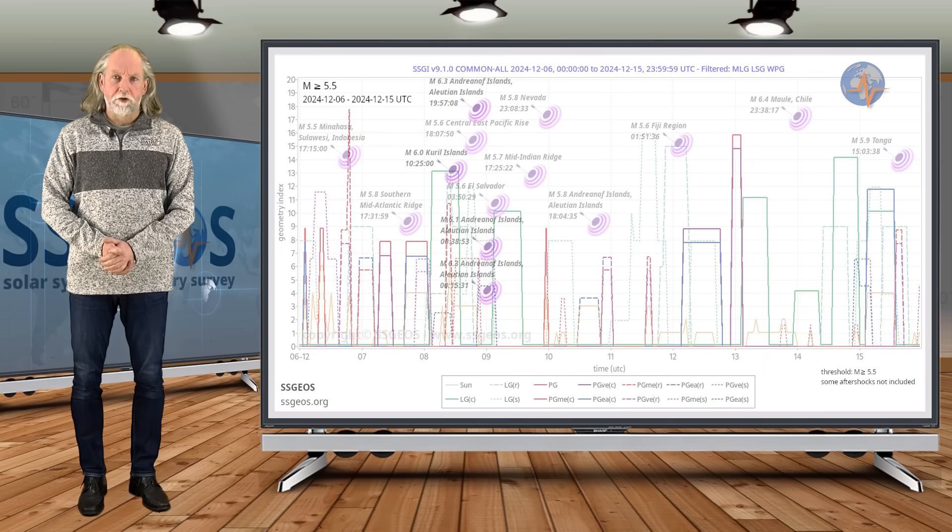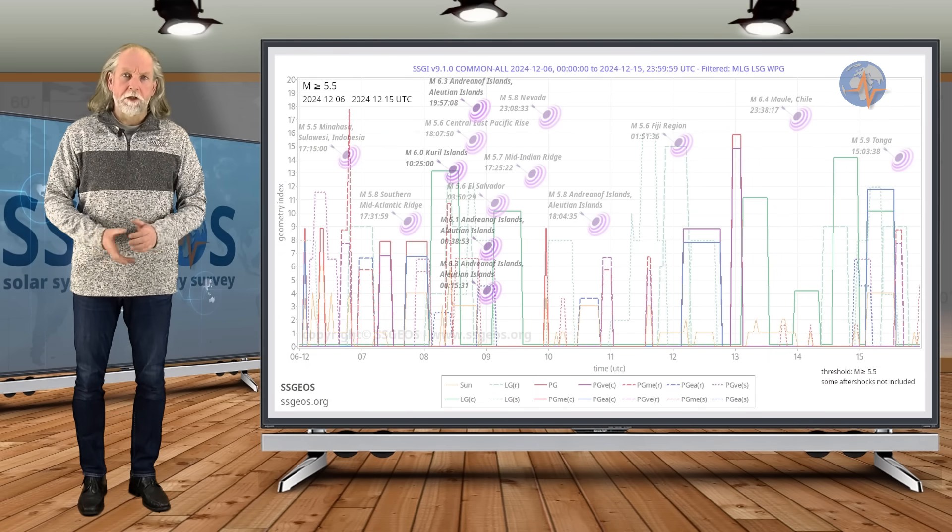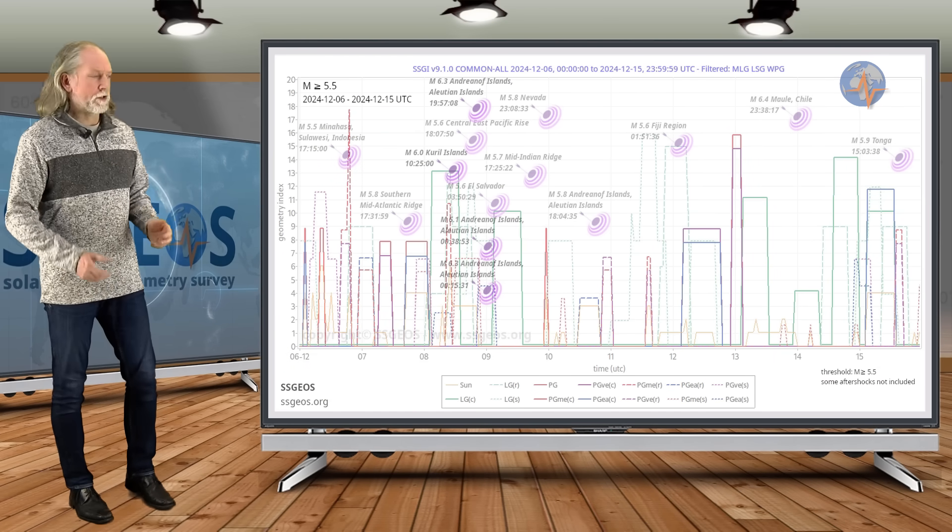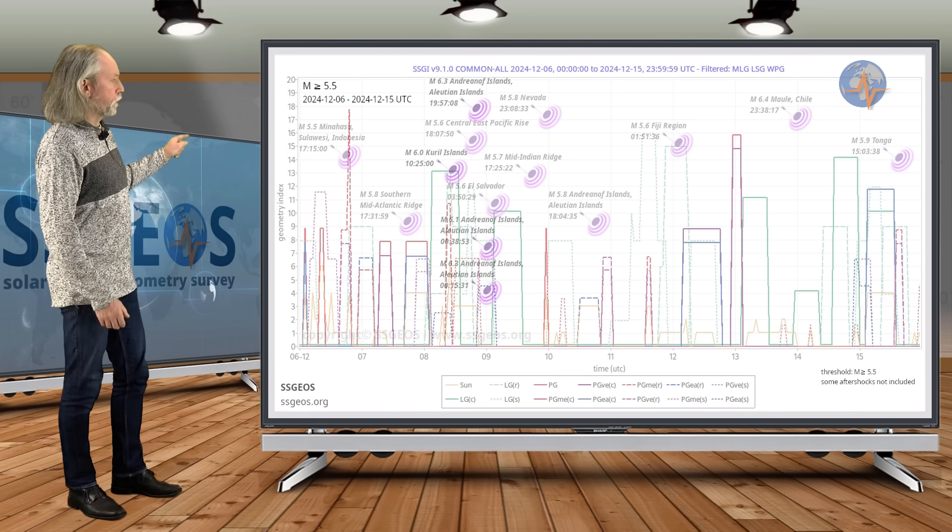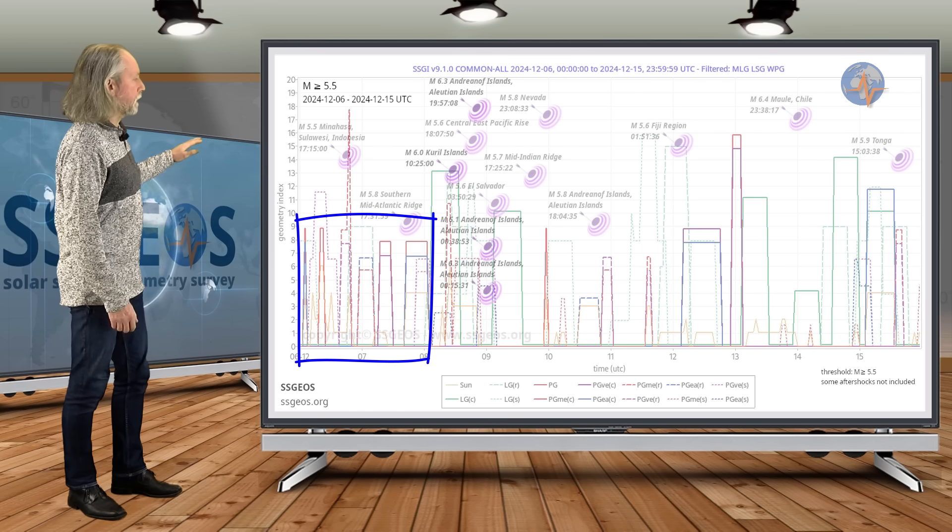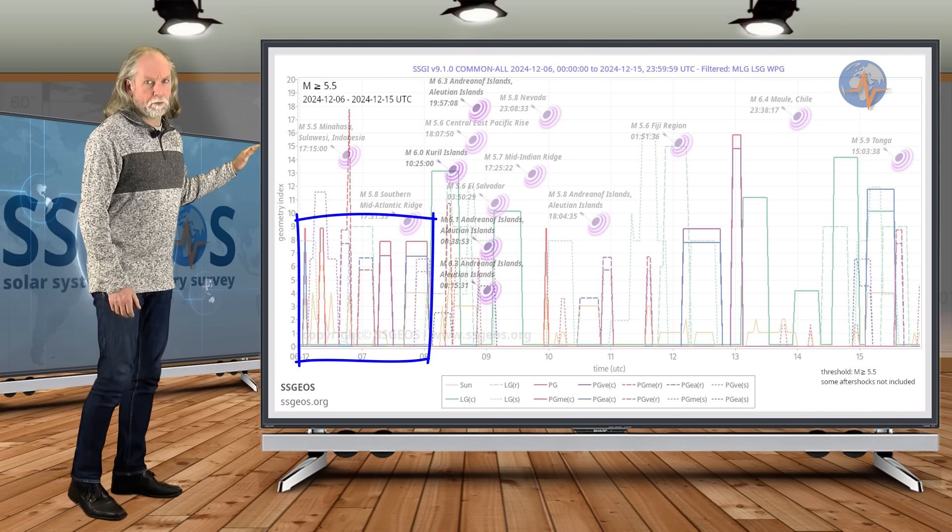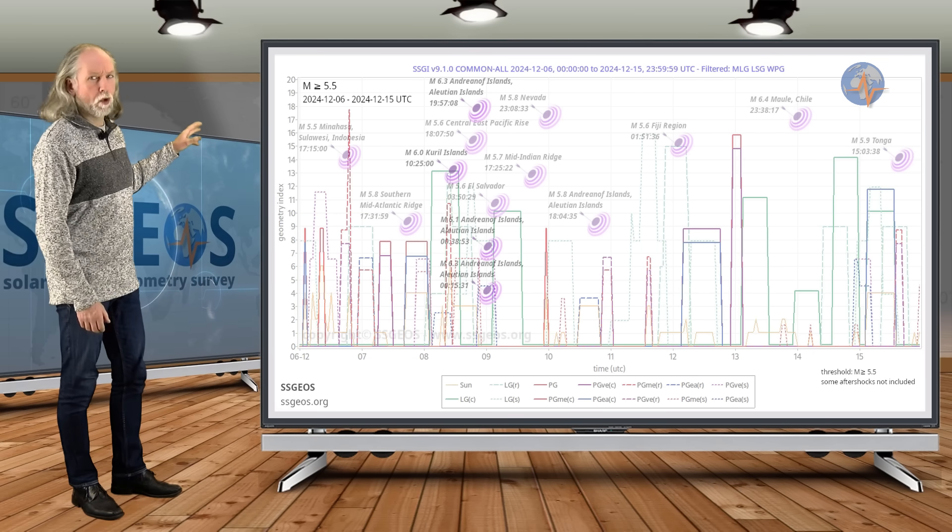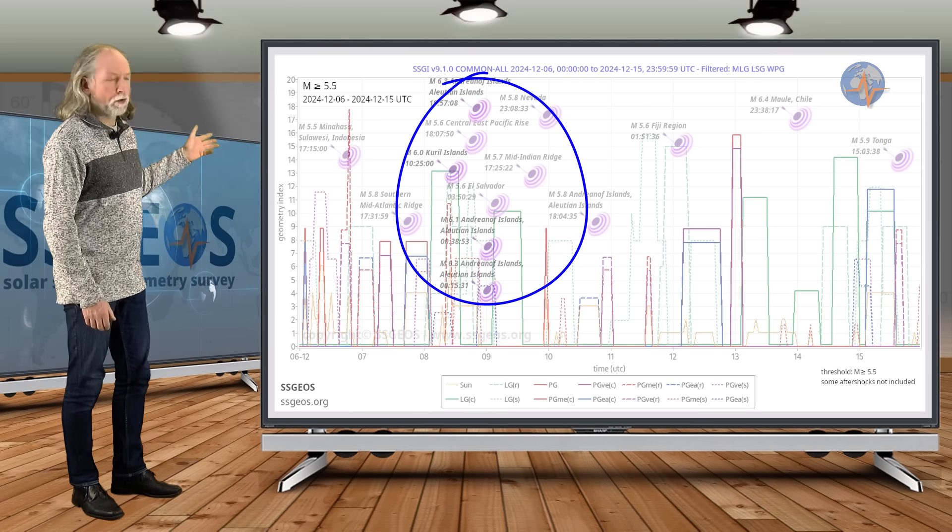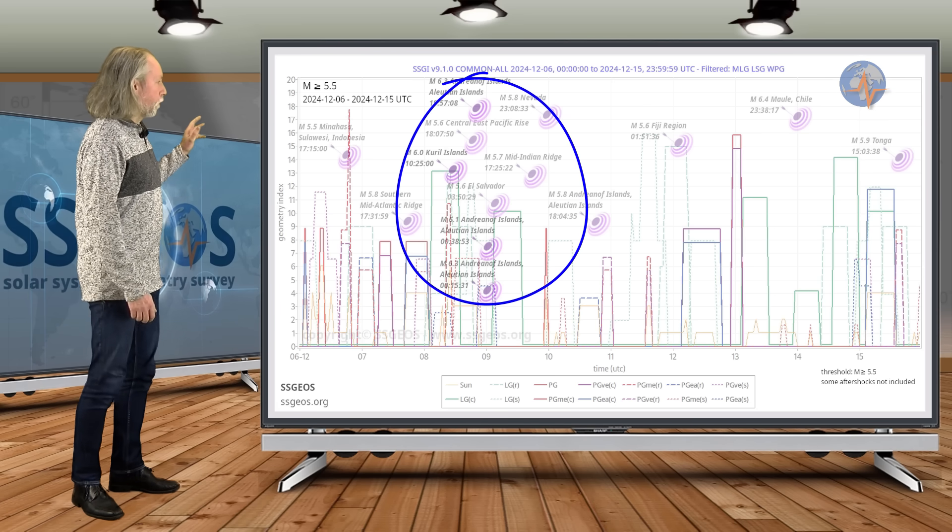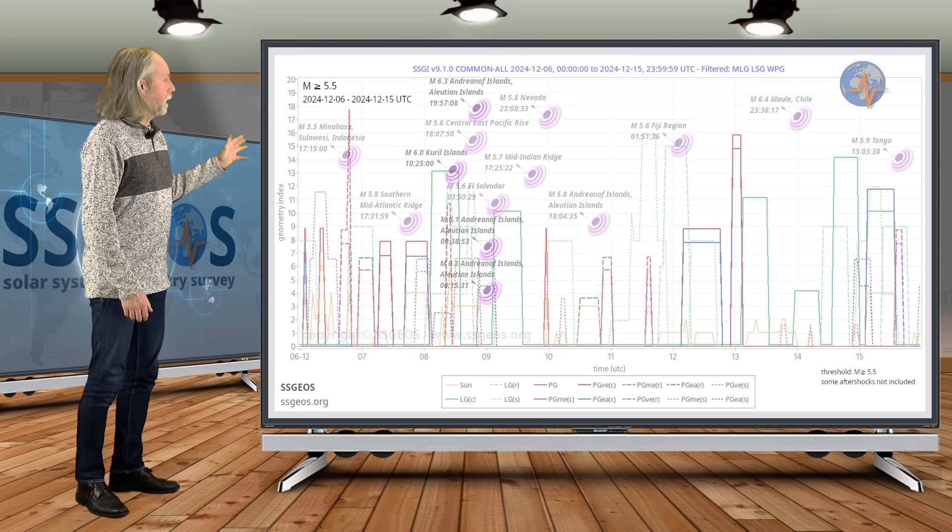Welcome to a new planetary and seismic update. We look at the SSGI graph from the previous timeframe, and you may recall that I emphasized the convergence of critical planetary geometry on December 6-7. As you can see, we actually had quite a clustering, a very obvious clustering of stronger earthquakes on December 8 and 9.